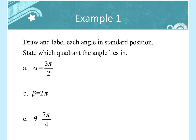This problem says: draw and label each angle in standard position, and state which quadrant the angle lies in. 3π/2 is at the bottom, so I would start here and go to here. I can name it alpha or 3π/2, and you also want to give it its direction so you know if it's positive or negative.